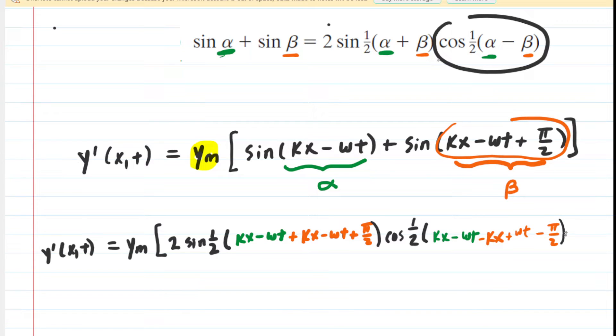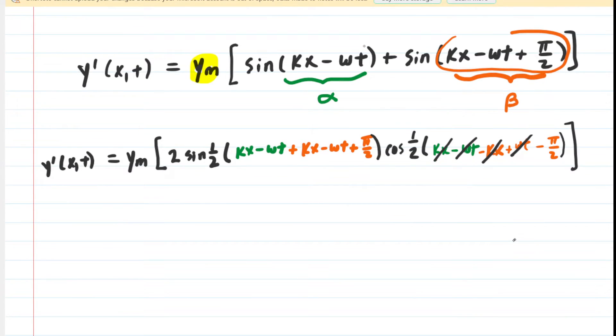That was a little bit small. Hopefully you can still see that on the screen. We're going to clean this up a little bit. If we look carefully, this kx minus kx cancel, and this negative ωt plus ωt also cancels. So we can rewrite.